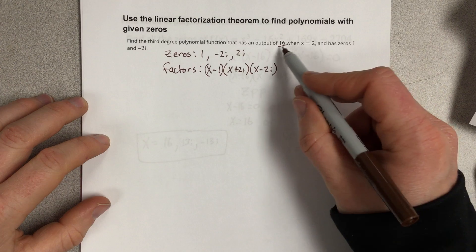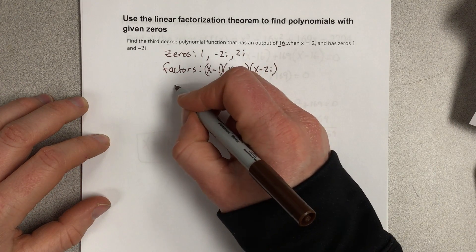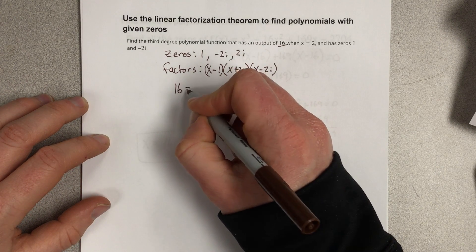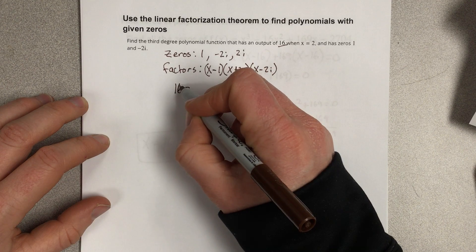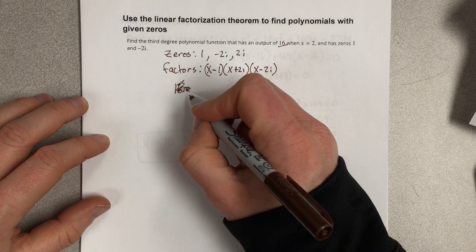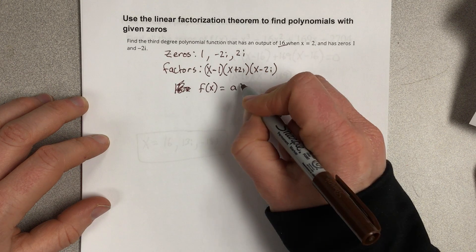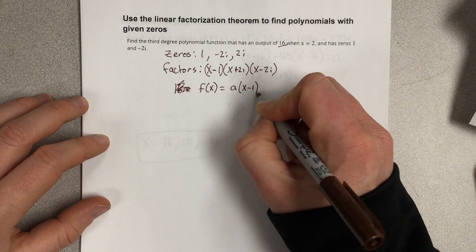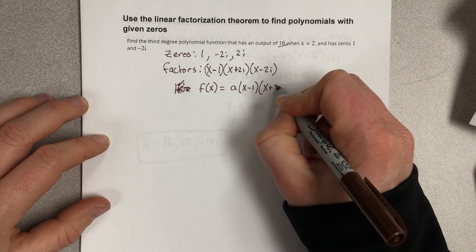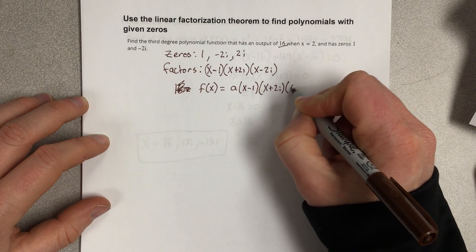And it says that our output is 16. So really, I have 16 is equal to, well, I could rewrite that. Let's wait. We're going to write this as f of x is equal to a times x minus 1 times x plus 2i times x minus 2i.